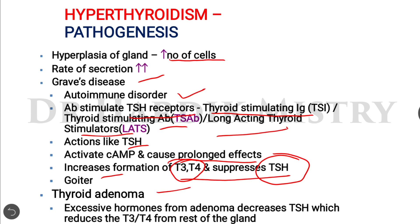In thyroid adenoma, there will be excessive hormones from the adenoma, which decrease TSH and ultimately reduce T3 and T4 from the rest of the thyroid gland. The tumor increases thyroid hormone, but due to this there is a decrease in TSH, and all normal thyroid gland tissue reduces T3 and T4 hormone secretion.